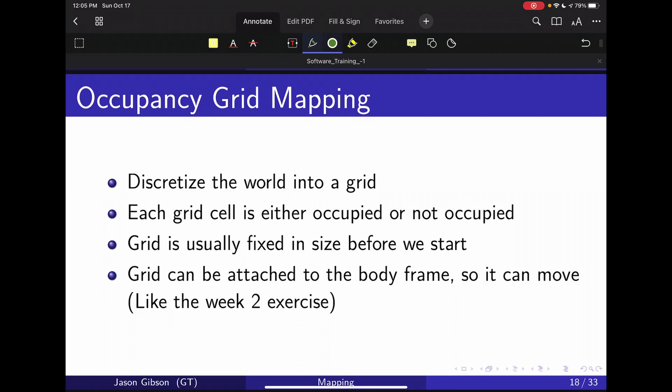And the grid can be attached to a body frame and it can move. So if you remember from week two, we had that little grid that would follow around the robot using our image space detections of the red to then do a flat ground plane projection. This was an occupancy grid map centered on the robot's body frame.